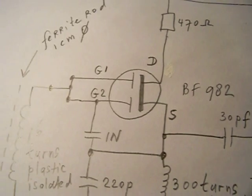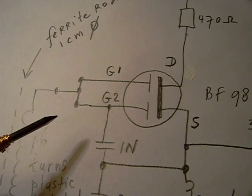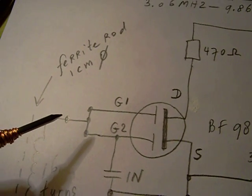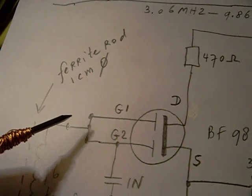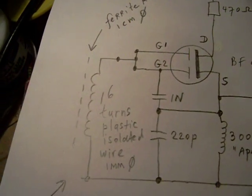One signal, the VFO signal, is directed to one gate, and the antenna signal is connected to another gate. That makes it so you can get a mixing effect.